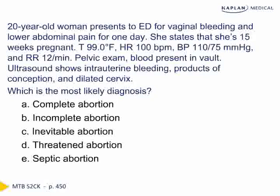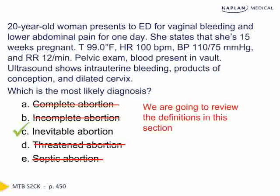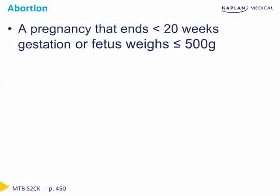Based on her clinical presentation, exam, and ultrasound findings, we diagnose her with an inevitable abortion. We're going to review all the different definitions in this section and understand why this is the most correct answer. Abortion is defined as pregnancy termination at less than 20 weeks gestation, or with a fetus born less than 500 grams.